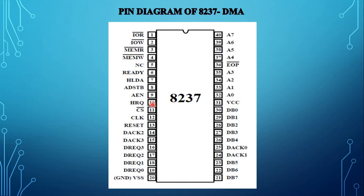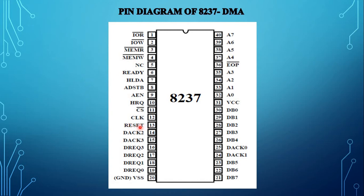Pin number 10 is HRQ, the hold request signal. It is an output signal used to request control of the system bus. Pin number 11 is the chip select signal, which is an active low signal to select the 8237 during programming mode. Pin number 12 is the clock signal, used to generate timing signals for control operations. Pin number 13 is the reset signal. When it goes high, the command, status, request, and temporary registers are cleared, and the mask register is also cleared.